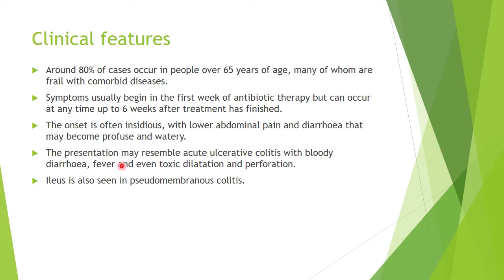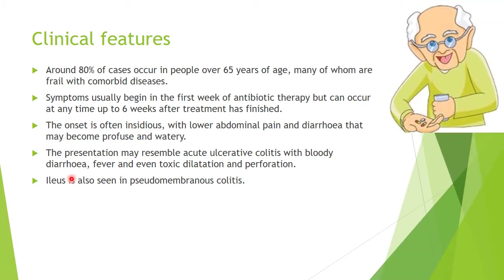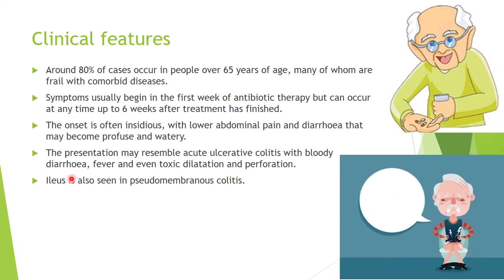The symptoms can be very severe, and in pseudomembranous colitis — the severest form of the disease — ileus is seen. People over 65 who take antibiotics can suffer diarrhea ranging from watery diarrhea to bloody diarrhea with fever, toxic dilatation, and perforation of the bowel.